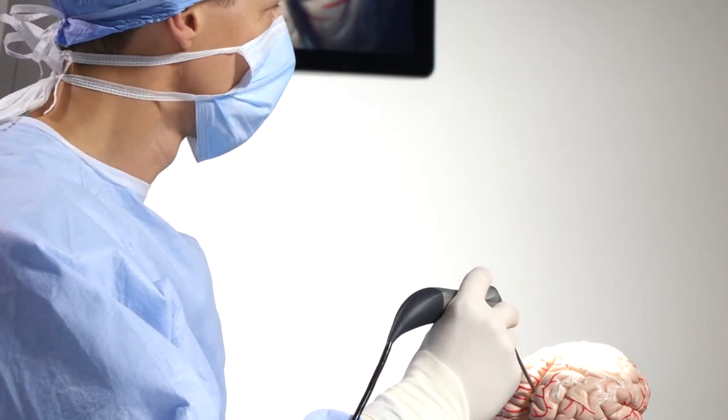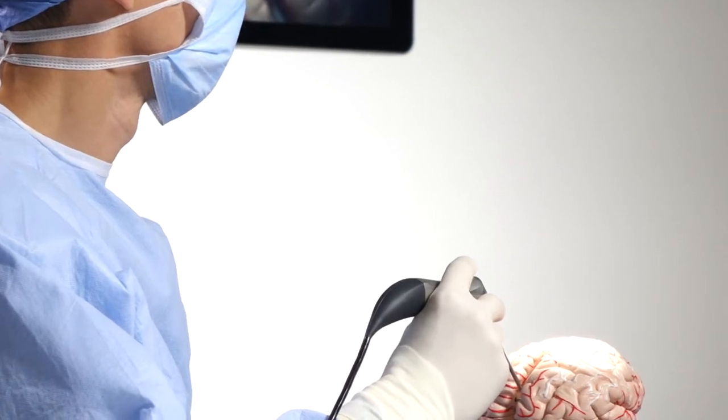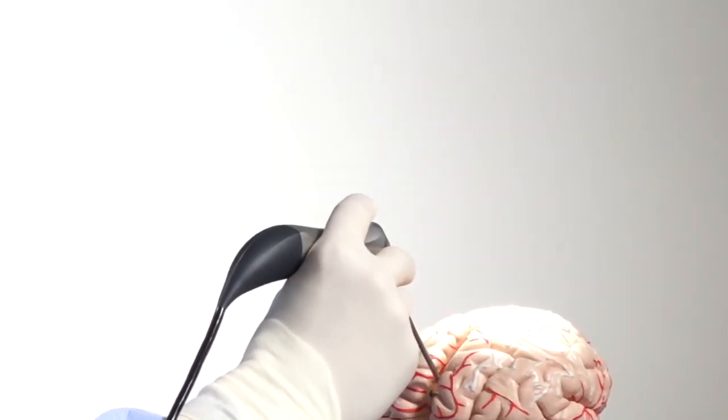The angled design of Zeiss Kivo enables you to insert it into the situs while keeping your hands out of sight and without repositioning Zeiss Kinevo 900.